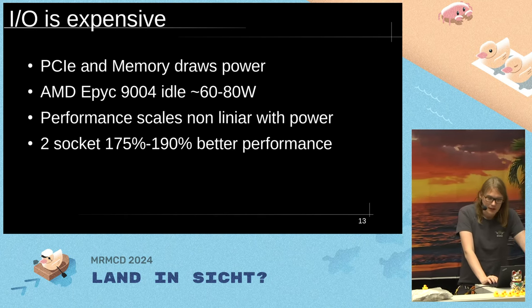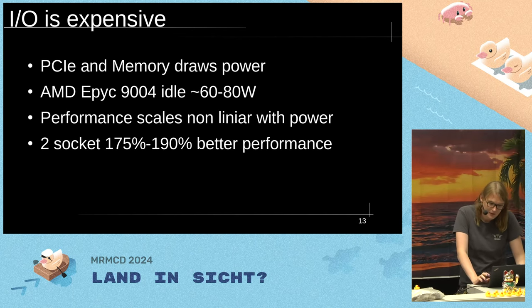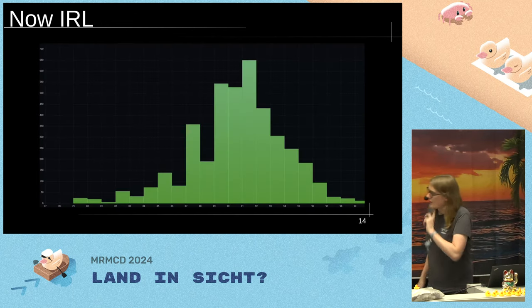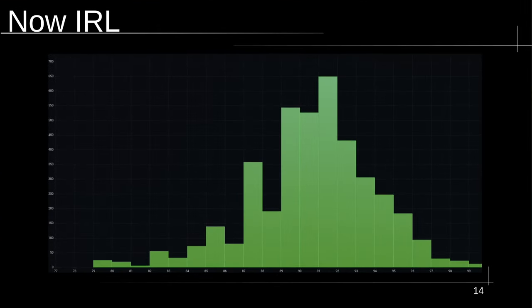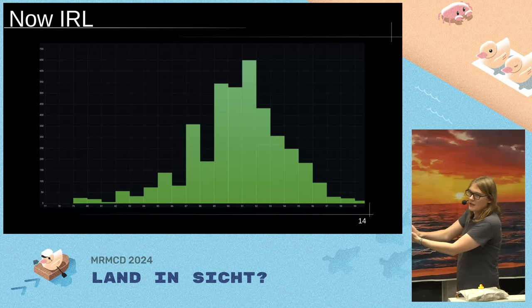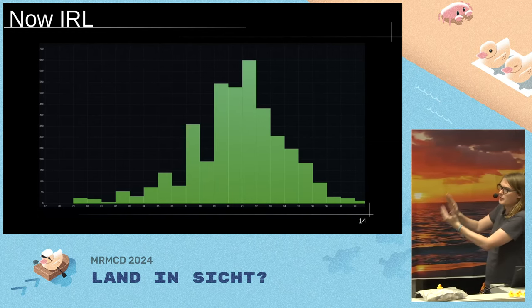Now let's look at some graphs. This first graph shows PSU efficiency of all servers at my workplace as a bar graph. The sweet spot we're hitting right now is around 91–92% efficiency. We also have outliers close to 100% and as low as 70%. Keeping an eye on this is quite useful — for example, if we reboot all servers, the whole graph shifts left toward 70% efficiency until they're back up and under load.